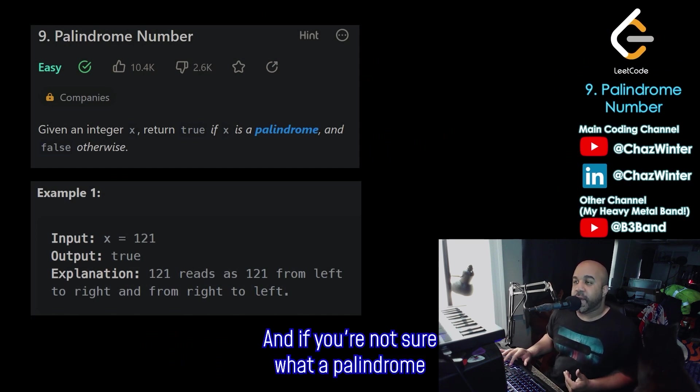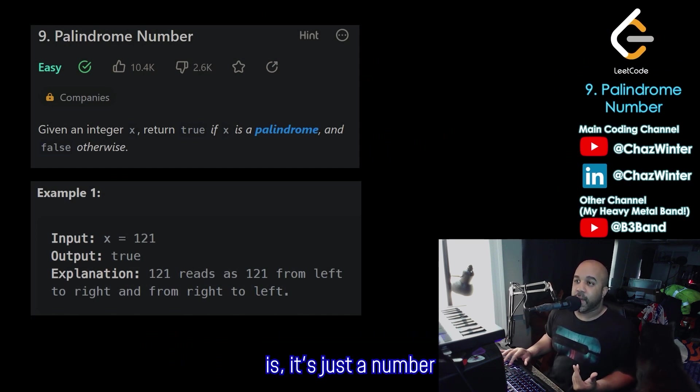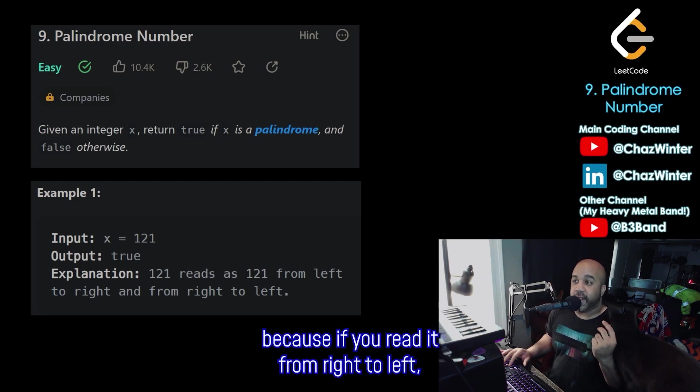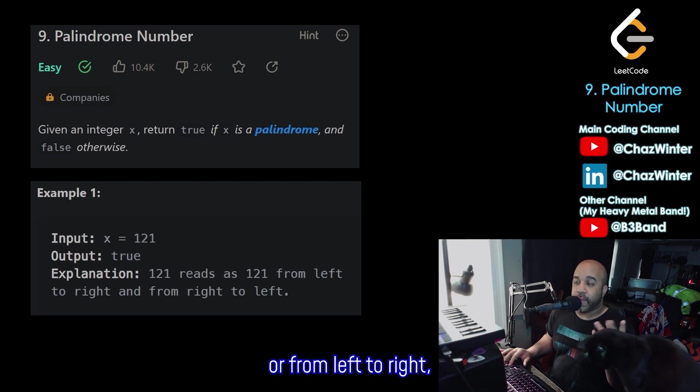return true if it is a palindrome and false otherwise. And if you're not sure what a palindrome is, it's just a number that reads the same whether you read it forwards or backwards. So in the first example, it says for 121, that's going to be true because if you read it from right to left or from left to right, you still read it as 121.